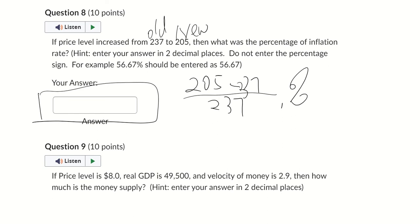If the price level is $8, real GDP is 49,500, velocity of money is 2.9, how much is our money supply?